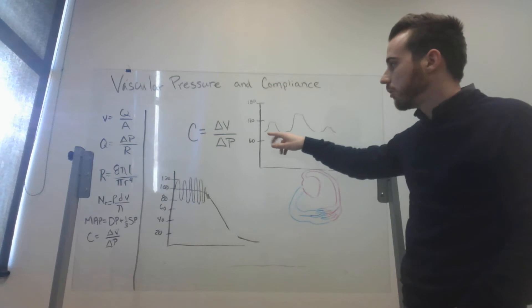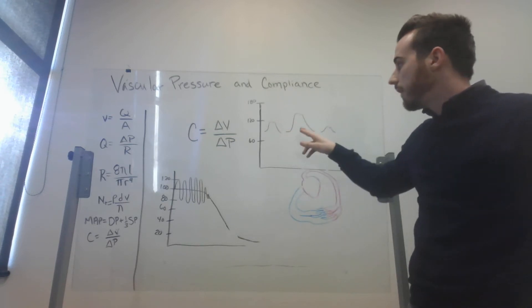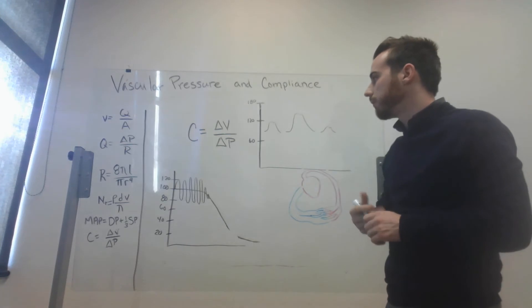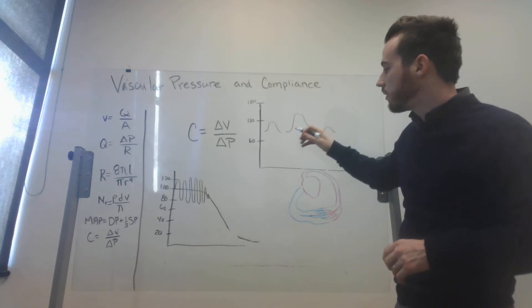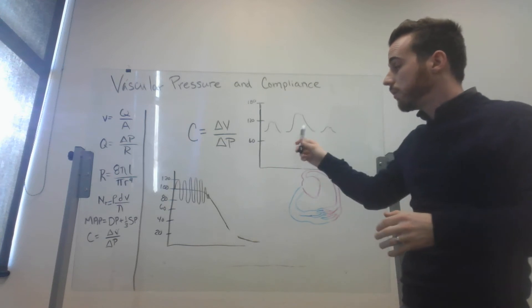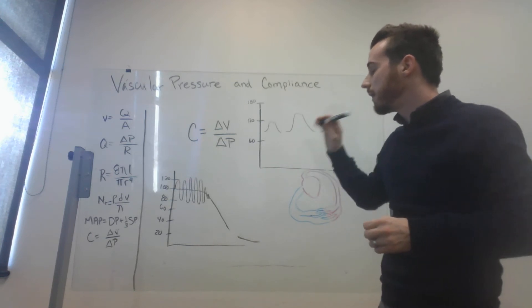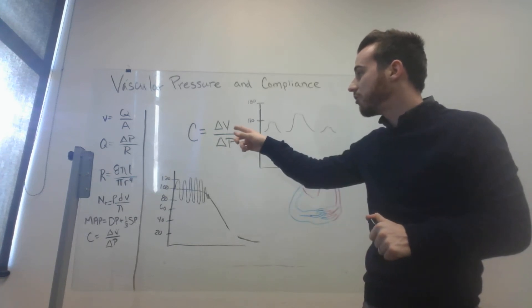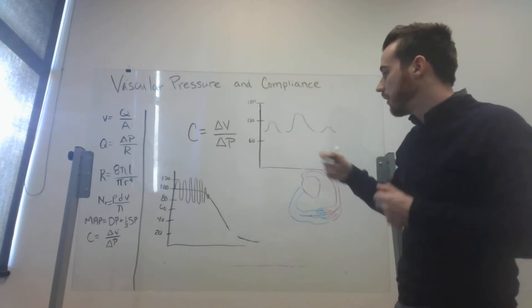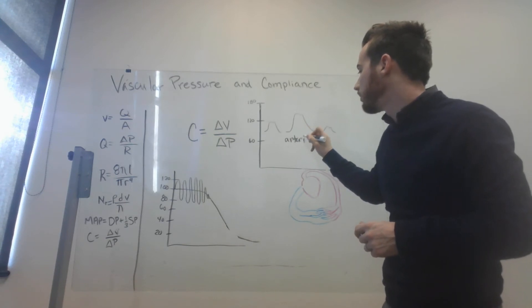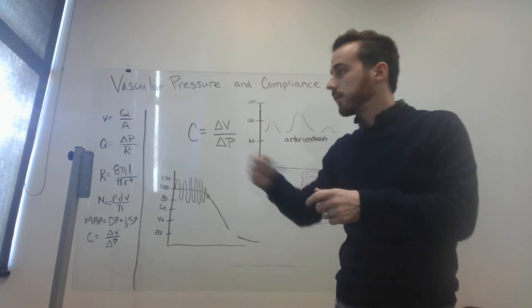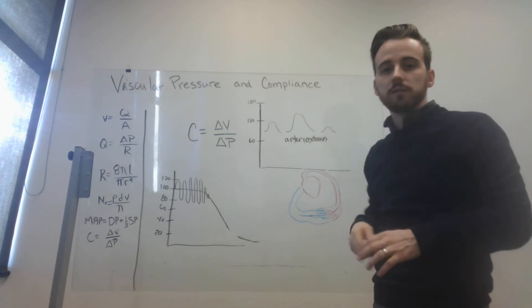This first one is normal, starting at about 80, going to 120, and coming back down to 80. These other two are pathologies. And I just wanted to think about what would make these happen. So this one, the systole is higher than normal. And the reason for that is actually because this vessel has become less compliant. Its ability to stretch has decreased. So it's created a greater pressure there. And this is arteriosclerosis. Arteriosclerosis is going to decrease the compliance of the vessel, causing the systole to be higher.